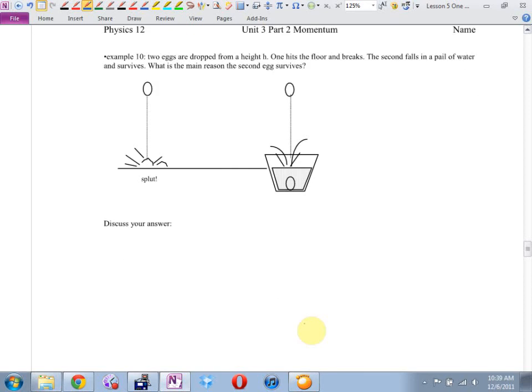I thought about doing this as a demonstration, but it's a messy one. Dropping eggs on the floor. Two eggs are dropped from the same height, H. One hits the floor and breaks. The second one lands in a pail of water and survives. What's the main reason the second egg survives? Well, let's look at this. First of all, what is both of their initial velocities? Are they both falling the same distance? Yeah. Same height. So what can you tell me about their final velocity just before impact, whether it's ground or water? Okay.